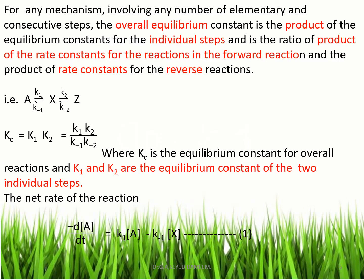For any mechanism involving any number of elementary and consecutive steps, the overall equilibrium constant is the product of the equilibrium constants for the individual steps, and is the ratio of the product of the rate constants for the forward reactions to the product of rate constants for the reverse reactions.